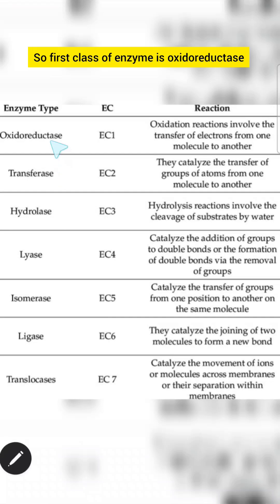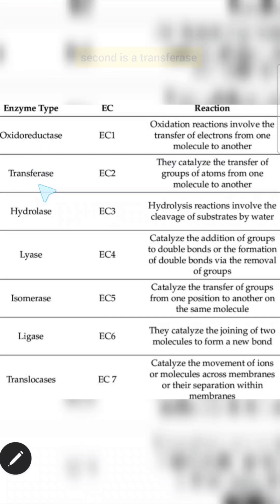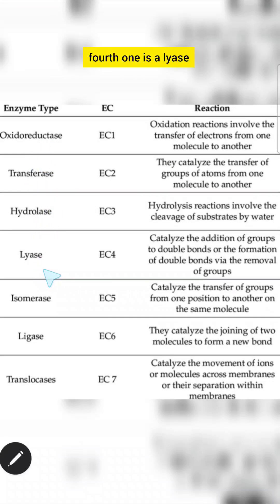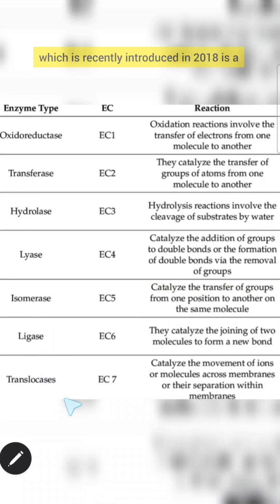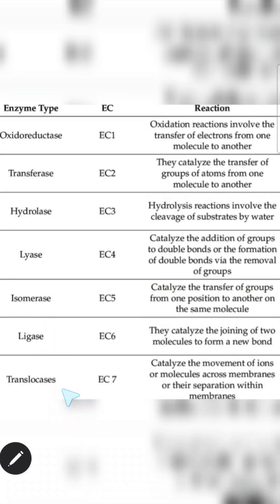The first class of enzyme is oxidoreductase, second is transferase, third is hydrolase, fourth is lyase, fifth is isomerase, sixth is ligase, and the seventh — recently introduced in 2018 — is translocase.